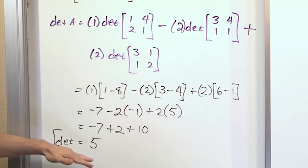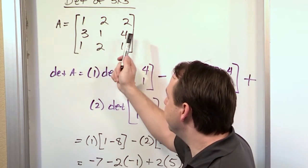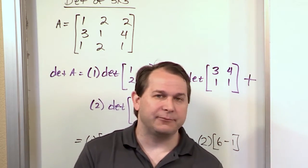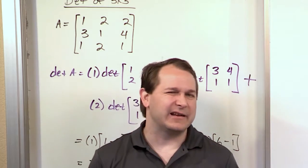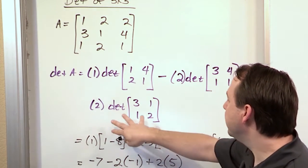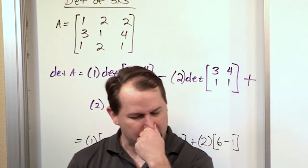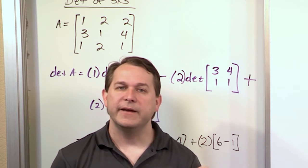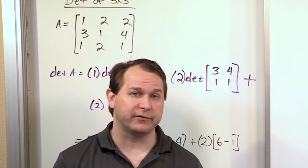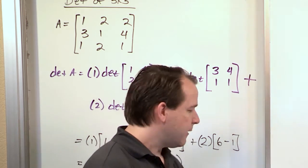Look at the work on the board and think about what you would need to do with row reduction. For this matrix, row reduction wouldn't be too bad since there's a 1 in the top-left, but you'd still need steps to zero out entries, keep track of any modifiers out front, and multiply diagonal elements. This method is bulletproof: 1 times the determinant of its submatrix, 2 times its submatrix, 2 times its submatrix — and finding 2x2 determinants is very simple. We'll do a couple more examples.